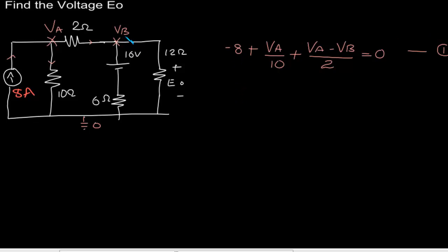We will write the KCL at this node. That means Vb minus Va by 2 is current leaving that node, plus Vb minus 16 by 6 ohms. There is a current in this direction.